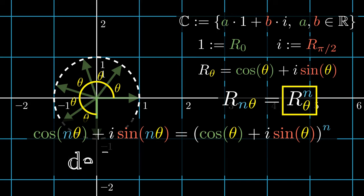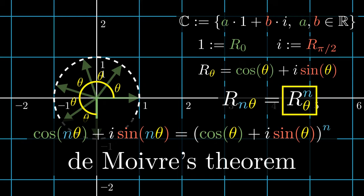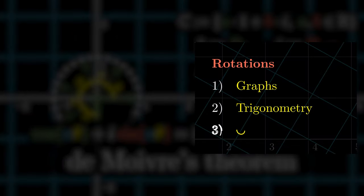This is equal to the nth power of the vanilla rotation. In fact, we have just proven the Moivre's theorem. And applied rotations in the context of complex numbers.